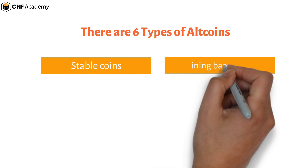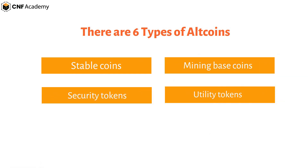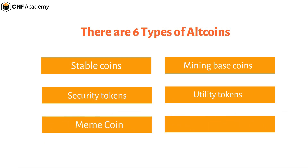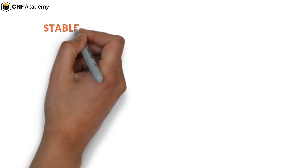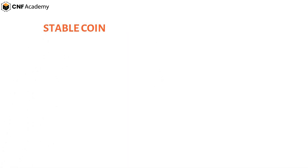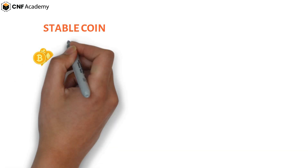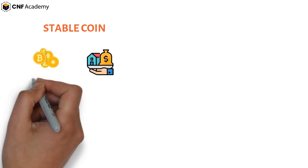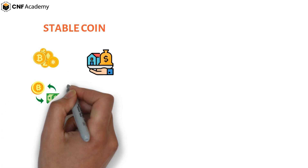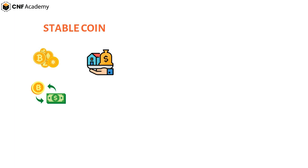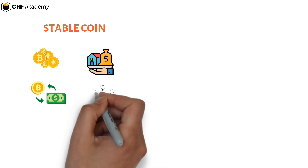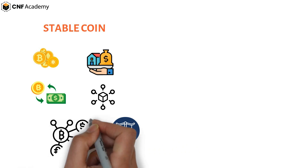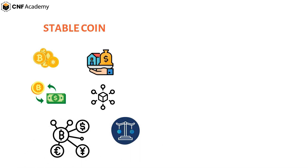We can classify these altcoins into 6 types: Stablecoins, Mining-based coins, Security tokens, Utility tokens, Meme coins, and Staking-based coins. Stablecoins are cryptocurrencies whose values are tied to real-world assets like fiat currency, commodity, or other cryptocurrencies. It is a tokenized version of the asset and can be introduced into a blockchain ecosystem to facilitate seamless transactions, improved arbitrage, and value exchange.